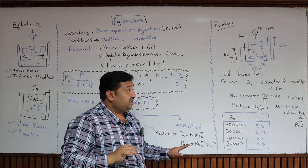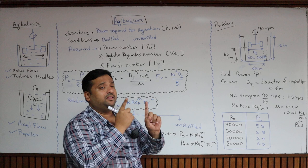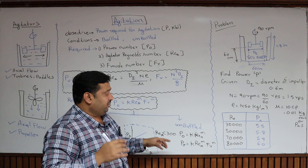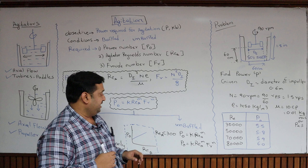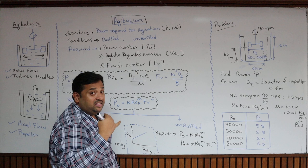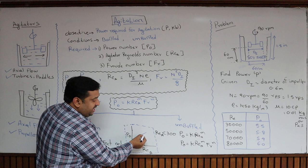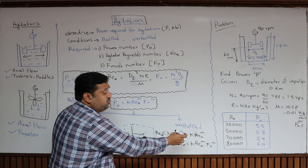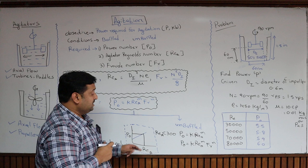The whole idea is to calculate the power number; once you know it, you know the power. There are two ways to find the power number. The first way is to use the constants k, m, and n to calculate it directly. The second way is to use existing graphs: plots of Reynolds number versus power number are available, and once you know the Reynolds number, you read off the power number from the graph.